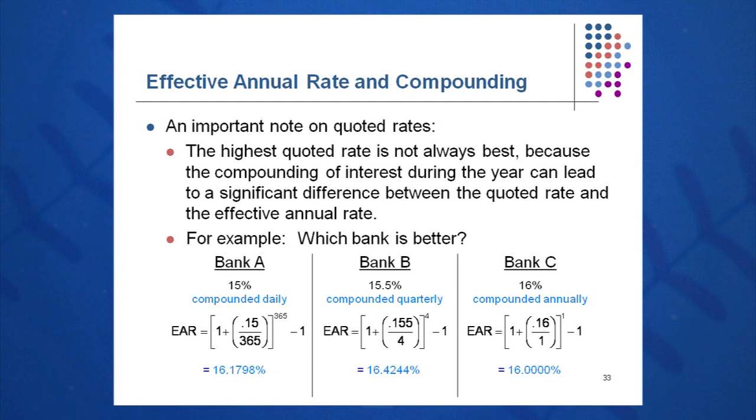Be careful about this. When you see compounded daily, M equals 365, 365 compounded periods. In Bank B, where it's compounded quarterly, M equals 4. And in Bank C, where it's compounded annually, M equals 1. So M is the number of times compounded.